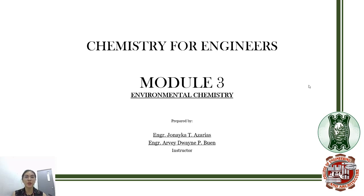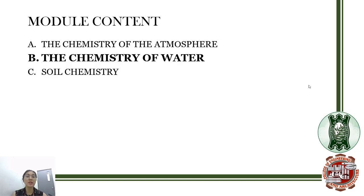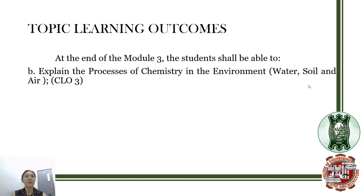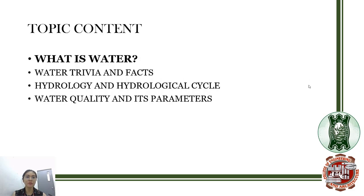Welcome everyone to the continuation of the discussion of module number three, environmental chemistry. To recall, this is the content of the module. Last meeting, we already finished with the chemistry of the atmosphere. Now we tackle the chemistry of the water. This is the learning outcome that you should achieve at the end of module three: explain the processes of chemistry in that environment. This is the content of the topic that we have.